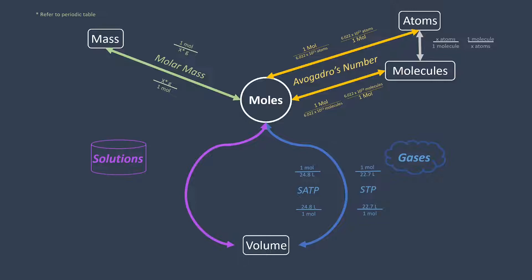As a recap, we've now covered one of the two pathways between moles and volume — the STP and SATP pathway for gases. These only work when the substance is a gas and the question specifically states STP or SATP. You cannot use 22.7 or 24.8 liters per mole just because liters and moles are involved — it must be gases at STP or SATP specifically.